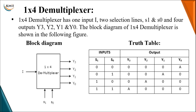Now let us look at a low-order demultiplexer — the 1-to-4 demultiplexer. In '1 by 4,' the first digit indicates the input and the second digit indicates the number of outputs. As it is a demultiplexer, it converts serial data into parallel form — one single input with multiple outputs. The 4 indicates the number of outputs available on this demultiplexer circuit.